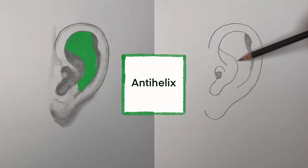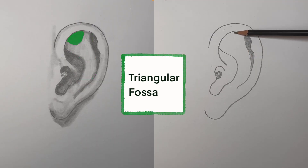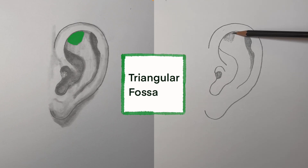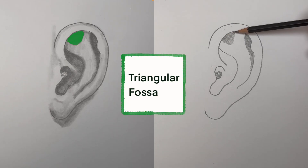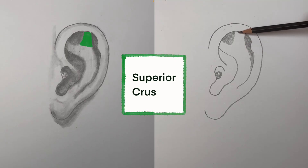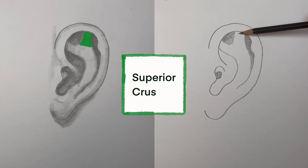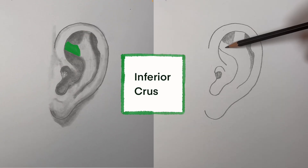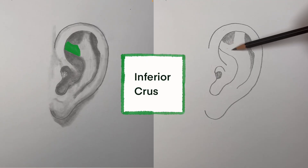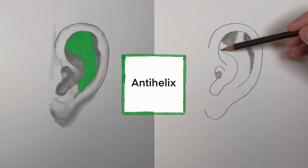That's this whole area here. We can divide the anti-helix into a few different areas. There's another fossa, or groove, kind of a depression, and it's triangular in shape, aptly called the triangular fossa. It's right up here, and because of that groove, the anti-helix looks like a Y shape. This section of the Y is called the superior crus, or the leg above, whereas this section of the Y is the inferior crus, or the leg below. Those are both part of the anti-helix.